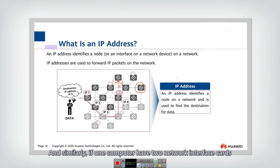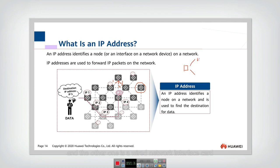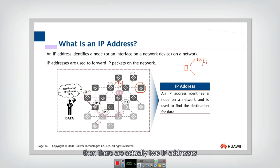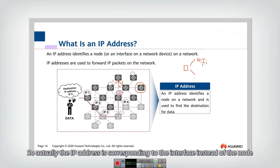Similarly, if one computer has two network interface cards - for example, one wireless network interface card and another wired network interface card - then there are actually two IP addresses: one for the wireless, another for the wired. So the IP address corresponds to the interface instead of the node.